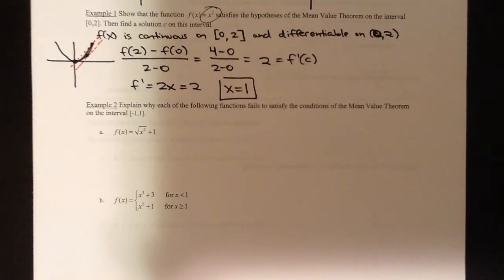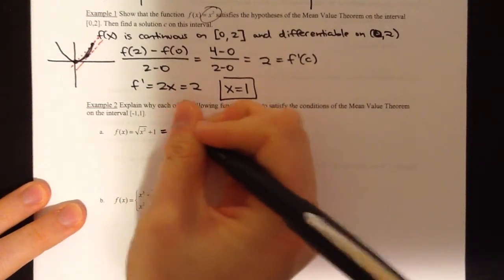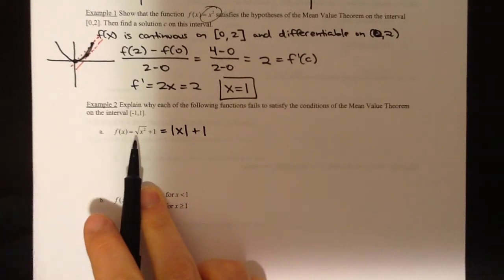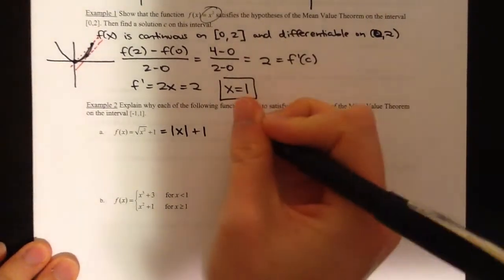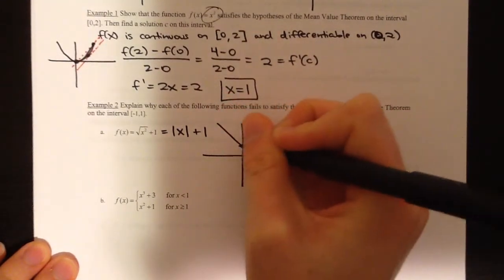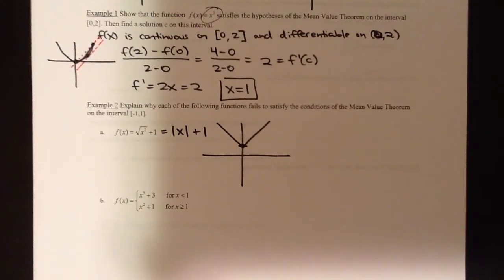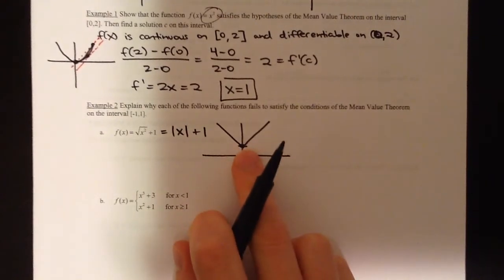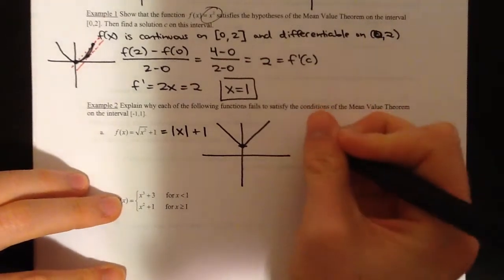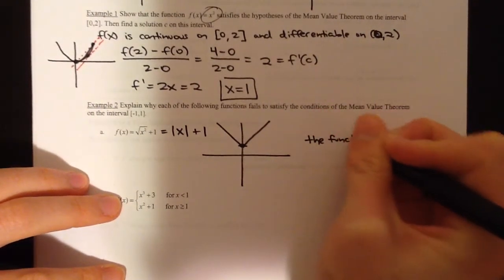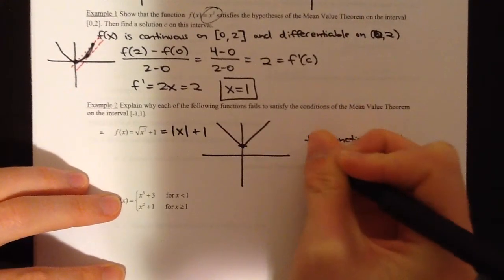Example 2: explain why the following functions fail to satisfy the MVT conditions — continuity and differentiability. First, note that √(x²) equals the absolute value of x, so this function equals the absolute value of x plus 1. We sometimes forget that √(x²) is not just x — x squared is always positive and the square root is always positive, so it always comes out positive. This absolute value function has a non-differentiable corner at x = 0, so the function is not differentiable on the open interval from negative 1 to 1.